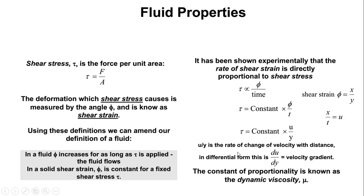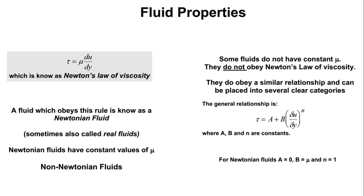Going forward, the final equation we get is tau equals a constant multiplied by du/dy, where du/dy is the velocity gradient. The constant of proportionality is known as dynamic viscosity — symbol mu (μ). So the final equation is Newton's law of viscosity: tau = mu × du/dy. Any fluid that obeys this law is known as a Newtonian fluid, or sometimes called a real fluid.